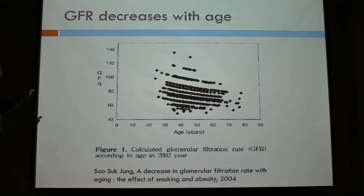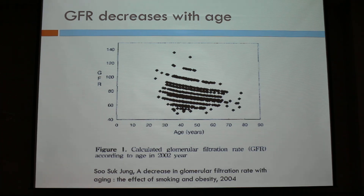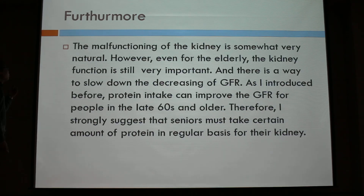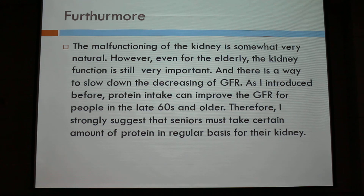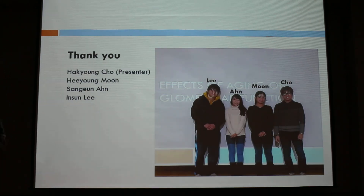In conclusion, GFR decreases with age — with GFR on the y-axis and age on the x-axis, you can see the negative correlation. Furthermore, this is just my opinion, but the malfunctioning of the kidney is somewhat natural. However, even for elderly people with declining kidney function, it is still very important for their life. There is a way to slow down the decrease of GFR: as I introduced with the exception, protein intake can improve GFR for people in their late 60s, 70s, and older. Therefore, I strongly suggest that seniors must take a certain amount of protein on a regular basis for their kidney health. This was my presentation.